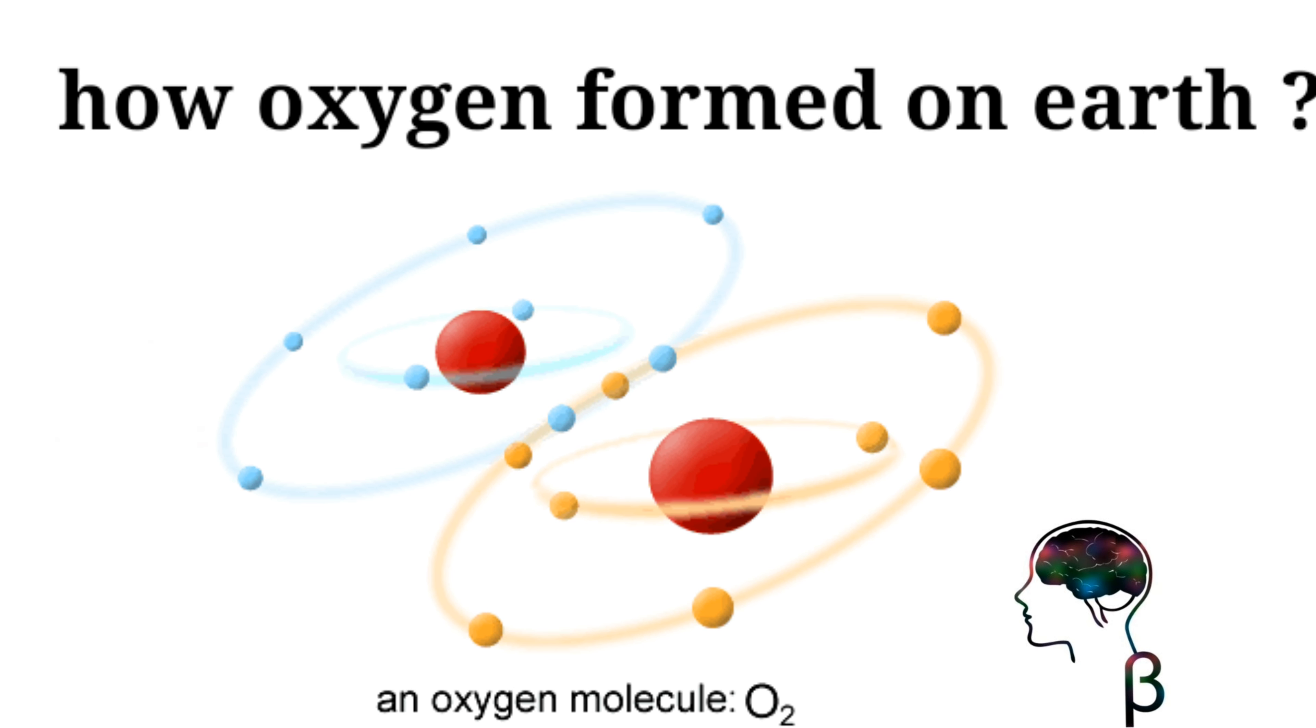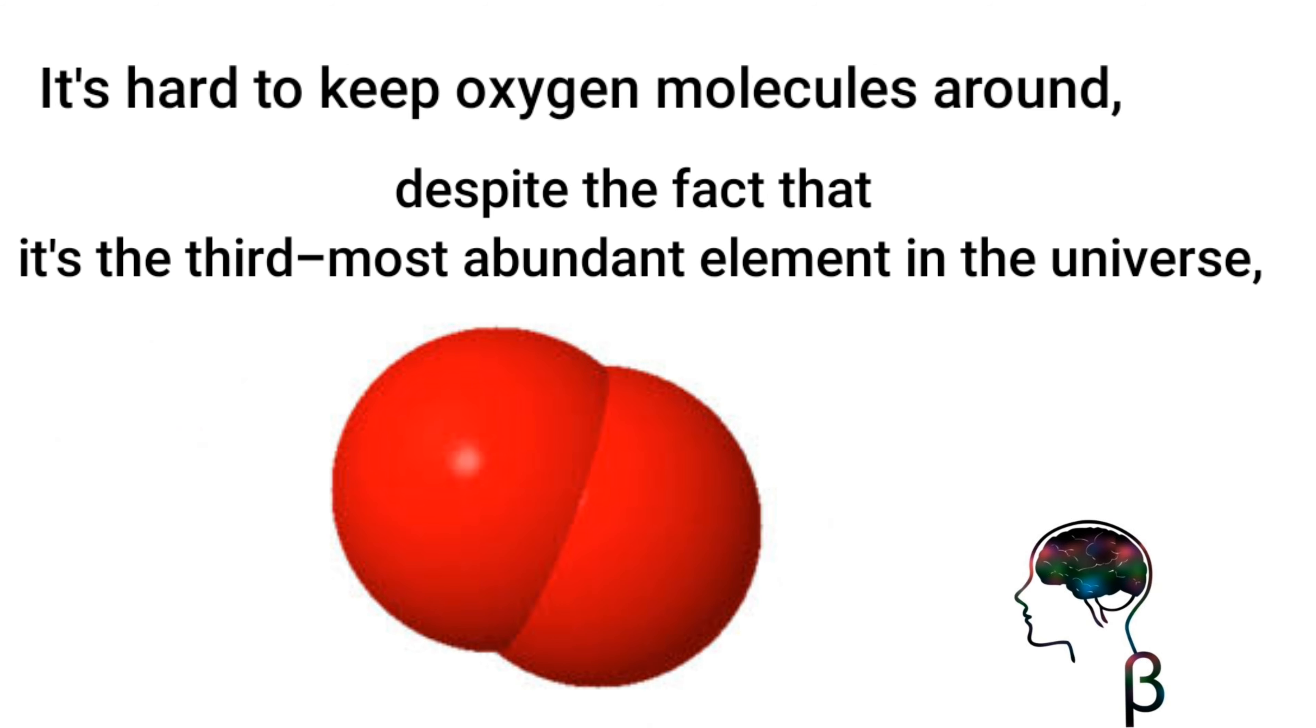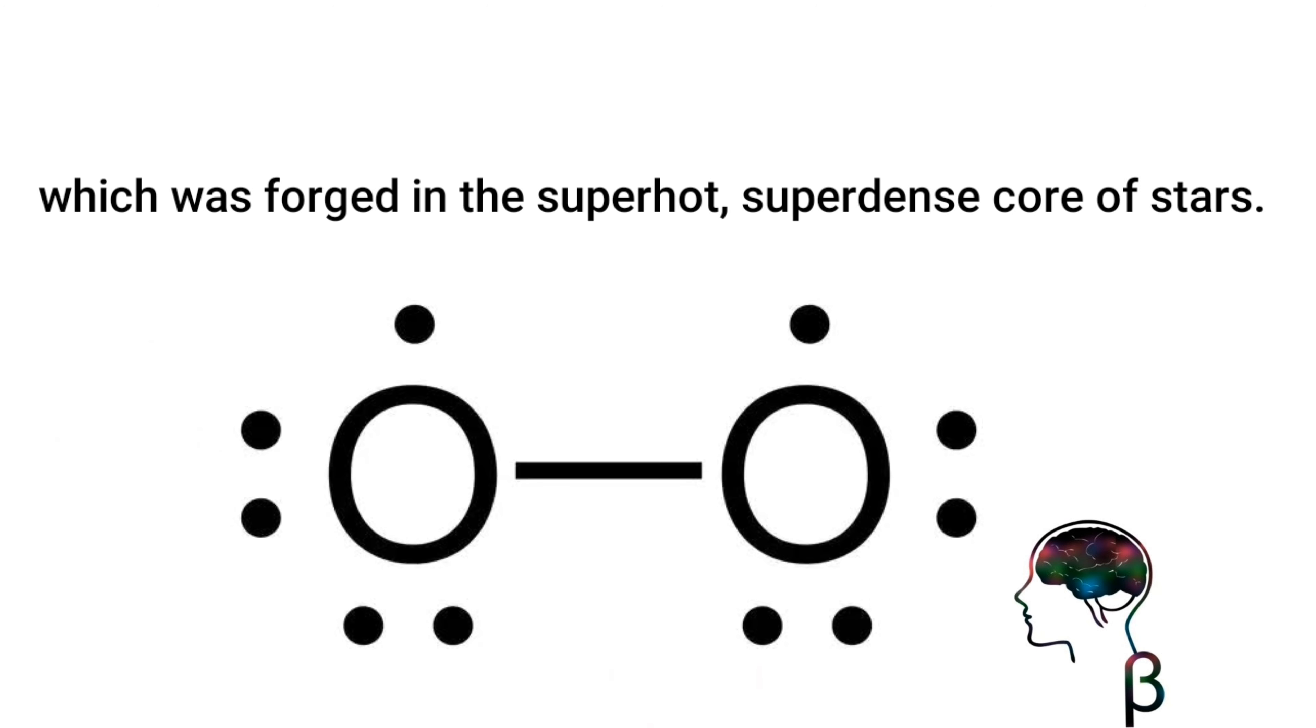How oxygen formed on Earth. It's hard to keep oxygen molecules around, despite the fact that it's the third most abundant element in the universe, which was forged in the superhot, superdense core of stars.